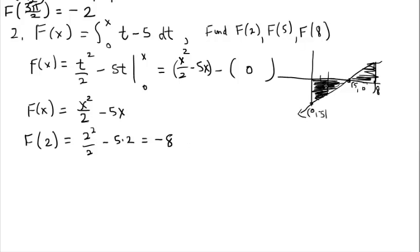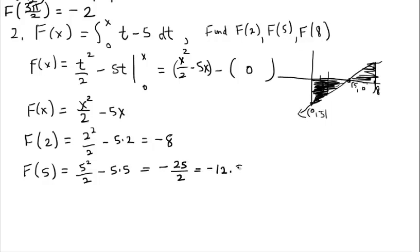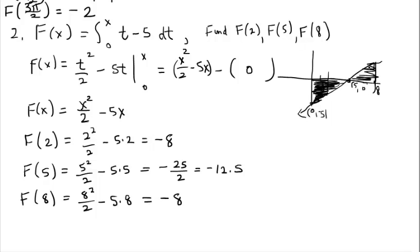Back to the visual, F of 2 is represented by negative 8. For F of 5: go back to the function and plug in 5, giving 5 squared over 2 minus 5 times 5, which is 25 over 2 minus 25, equals negative 25 halves, or negative 12.5. That makes sense — more negative accumulation from 0 to 5. For F of 8: 8 squared over 2 minus 5 times 8, giving 64 over 2 minus 40, which is 32 minus 40 equals negative 8. Interesting — the region from 5 to 8 above the x-axis exactly counters the extra accumulation, bringing us back to negative 8.